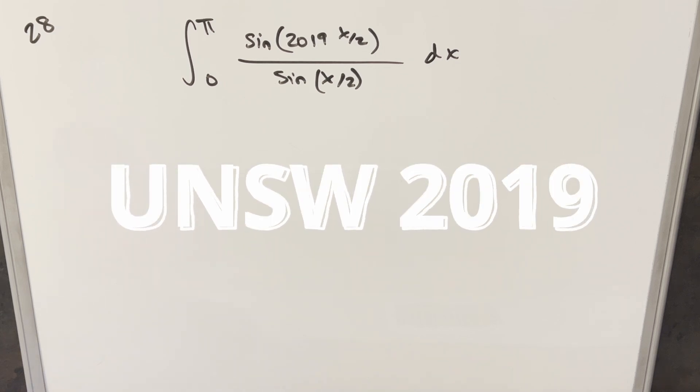Okay, we have another integral. This one's from the UNSW integration B from 2019, problem 28. We have the integral from 0 to pi, sine 2019 x over 2, over sine x over 2 dx.